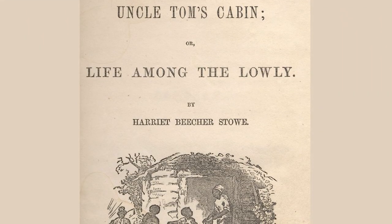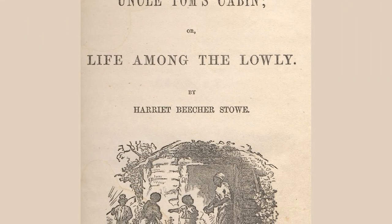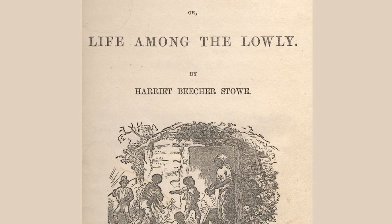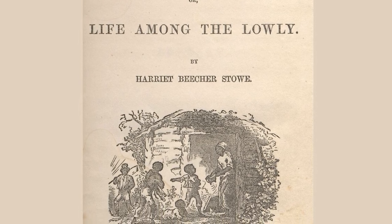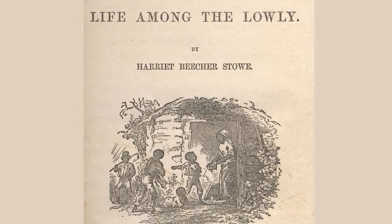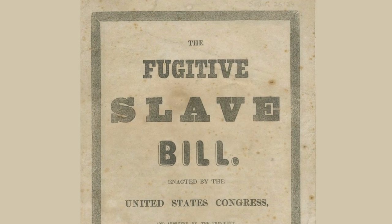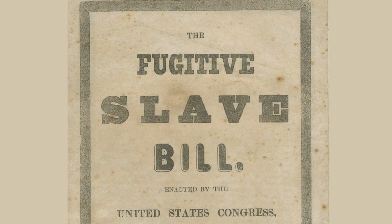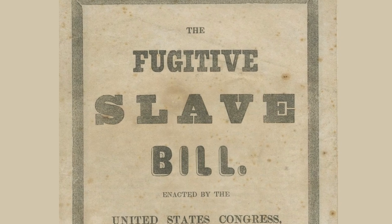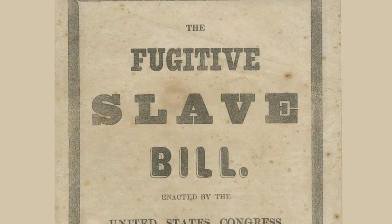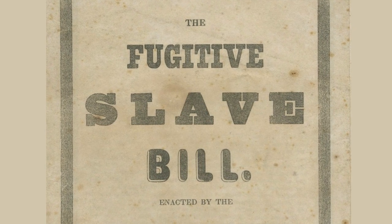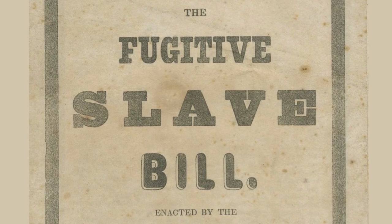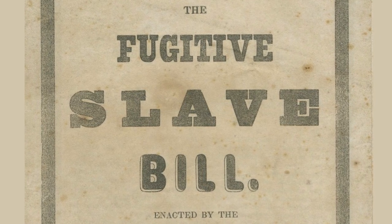In the canon of great American literature, Harriet Beecher Stowe's Uncle Tom's Cabin stands as one of the most powerful works of literature to have shaped American history. Published shortly after the passage of the controversial Fugitive Slave Act of 1850, Uncle Tom's Cabin, or Life Among the Lowly, published in 1852, revolutionized the way Americans perceived slavery.